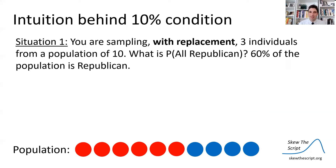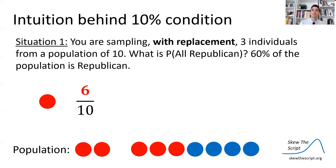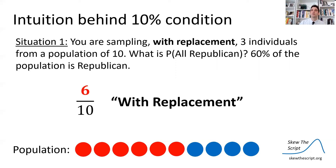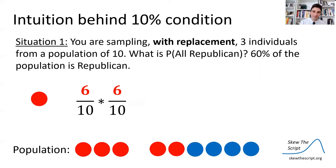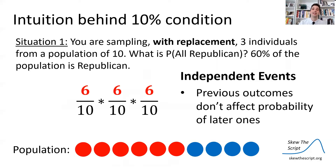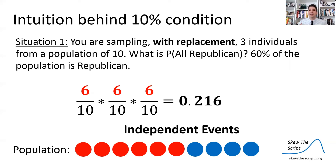Say you're sampling with replacement three individuals from a population of 10 — only 10 individuals in the whole state. You want to find the probability that all three people in your sample are Republican, and 60% of this population — six out of 10 voters — are Republican. The probability of getting a Republican the first time is 6/10. With replacement, we put that voter back, so the probability of getting another Republican is also 6/10, and the third is also 6/10. These are independent events, so we multiply them: 6/10 × 6/10 × 6/10 ≈ 21.6%.